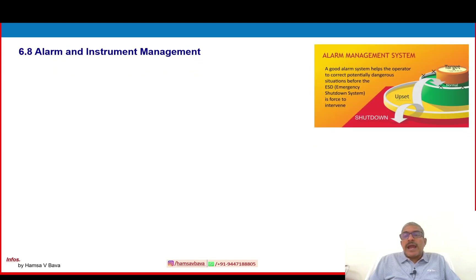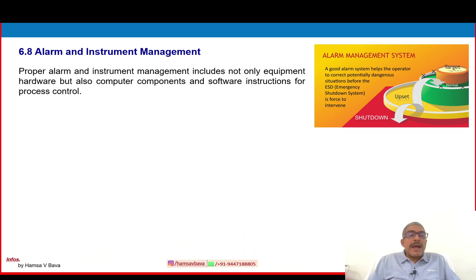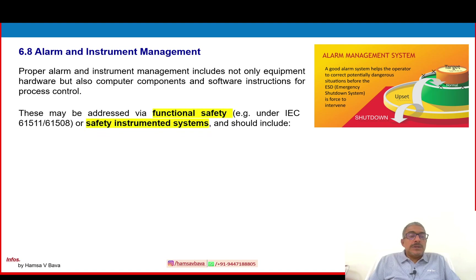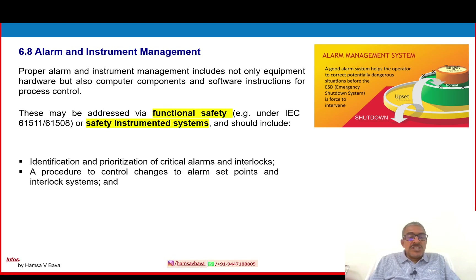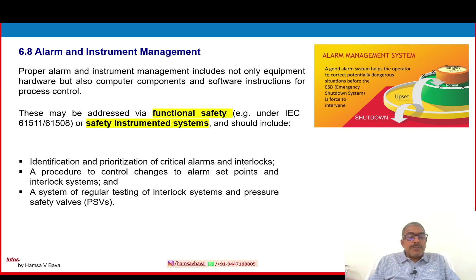6.8 — alarm management system: proper alarm and instrument management includes not only equipment hardware but also computer components and software instructions for process control. This may be addressed via functional safety, for example under IEC standards, or safety instrumented systems (SIS), and should include identification and prioritization of critical alarms and interlocks, a procedure to control changes to alarm set points and interlock systems, and a system of regular testing of interlock systems and pressure safety valves.